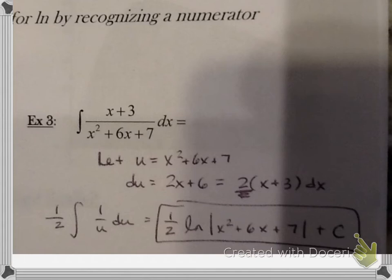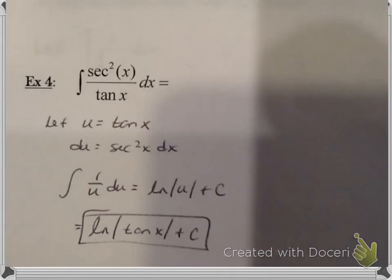Here's example 3: 1 half ln of the absolute value of x squared plus 6x plus 7 plus c. Take a look at the u substitution I made there off by a factor of 2. And then, example 4 was a little less work. u is tangent. And the derivative came out to be nice, secant squared. So everything matched up beautifully. So just the ln of the absolute value of tangent.